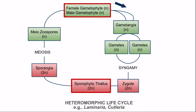The fourth type of life cycle is the heteromorphic life cycle. It is observed in Laminaria and Cutleria, which are brown algae of class Phaeophyceae. As the name suggests, heteromorphic life cycle also has two generations or two types of thallus — one is gametophytic or haploid and another one is sporophytic or diploid — but both these thalli are morphologically dissimilar. So this type of alternation of generation is known as heteromorphic.